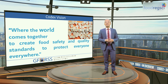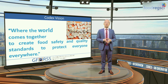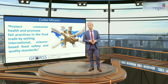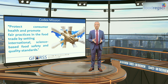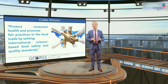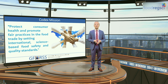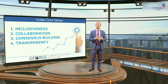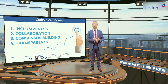The strategic plan of the Codex Alimentarius Commission has adopted a vision for the years 2020–2025, where the world comes together to create food safety and quality standards to protect everyone, everywhere. The mission of the Codex Alimentarius Commission was set and remains unchanged: to protect consumers' health and to promote fair practices in the food trade by setting international, science-based food safety and quality standards. Codex's mission is to be fulfilled while observing the values of inclusiveness, collaboration, consensus building, and transparency in decision-making.